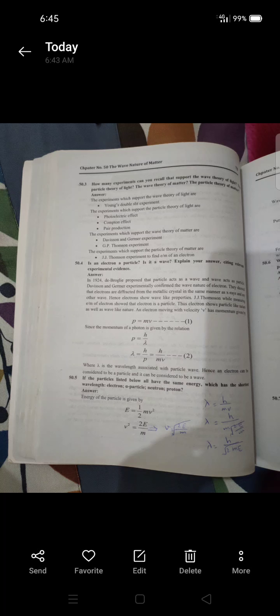Davison and Germar experimentally confirmed the wave nature of electron. They showed that electrons are diffracted from metal crystals in the same manner as x-rays and any other wave, hence electrons show wave-like properties. JJ Thompson, while measuring e/m of electron, showed that electron is a particle. Thus, electron shows particle-like nature as well as wave-like nature.